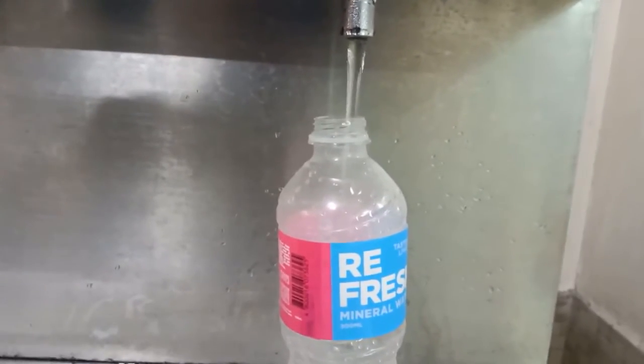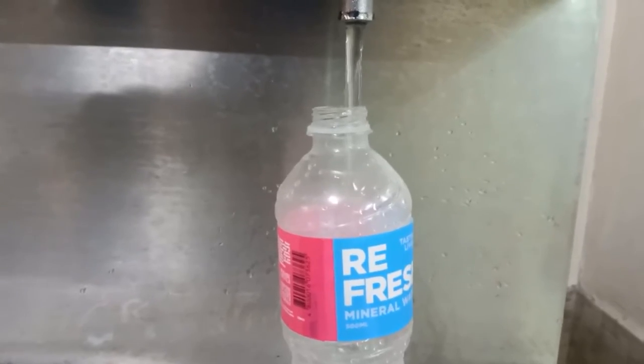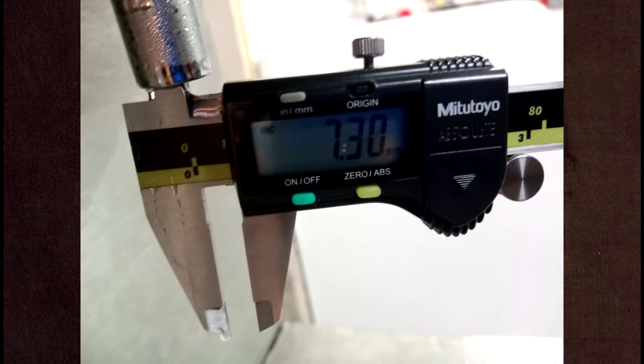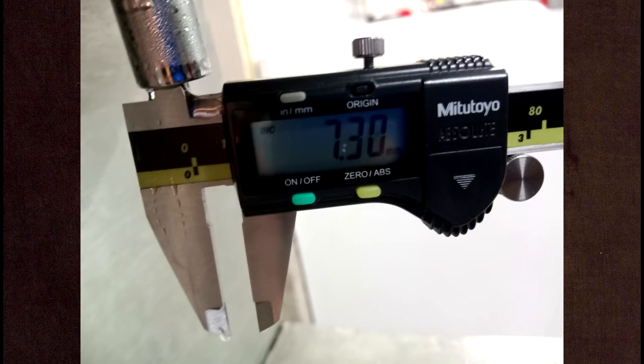Select a drinking fountain on the ground floor or second floor areas. Using digital vernier caliper measure the inner diameter of the water outlet.